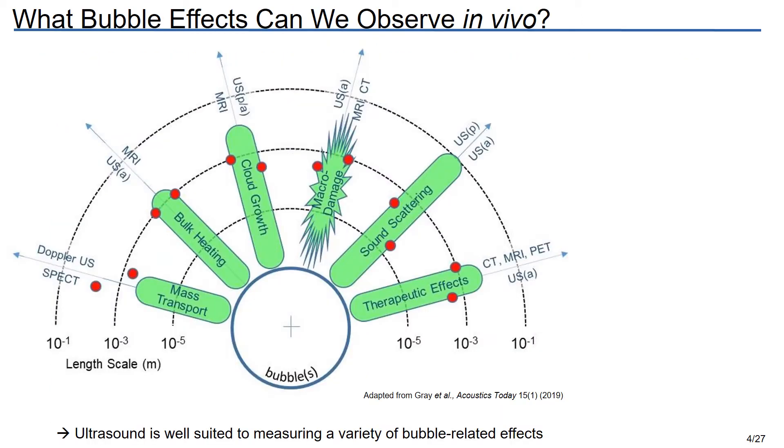So we want to keep track of bubble activity, so what exactly can we observe in vivo? I've tried to summarize the answer to that question in this diagram here, where I'm showing the different bio-effects inside these green shapes, and these red dots here indicate approximately best spatial resolution of the imaging modalities summarized here: CT, MRI, PET, and both active and passive ultrasound.